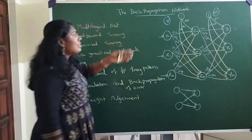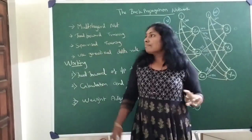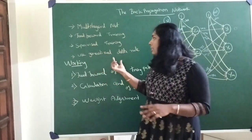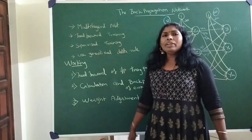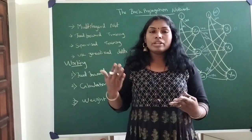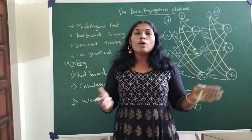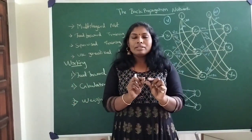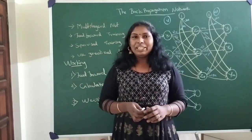Now we know what a backpropagation network is, why it is called a multi-layer network, why it is called feed-forward training, that it uses supervised learning and the generalized delta rule, and we understand its architecture. In the forthcoming videos, I will give you the actual algorithm of how a backpropagation network works, followed by a single worked example showing how learning occurs in one step. Thank you.